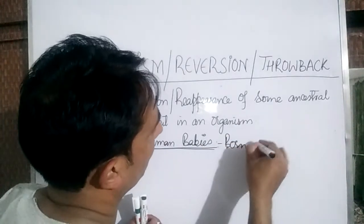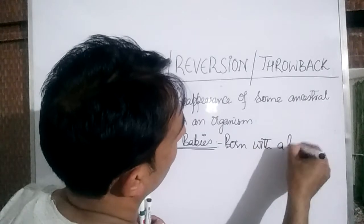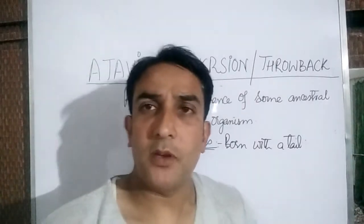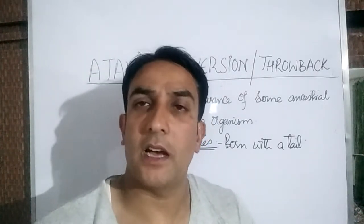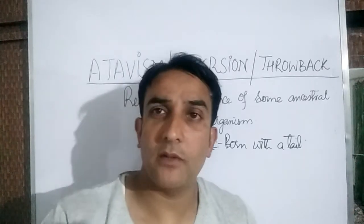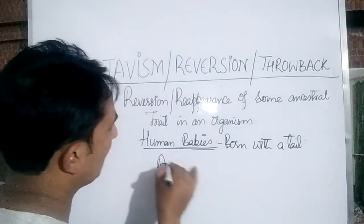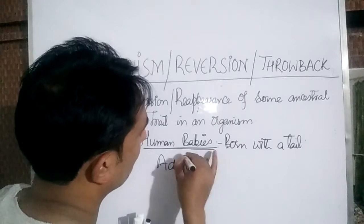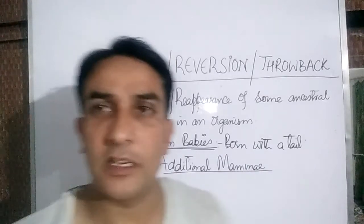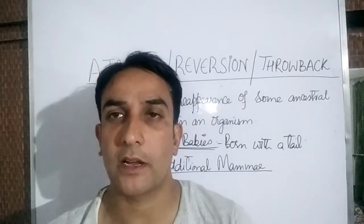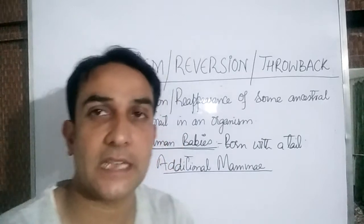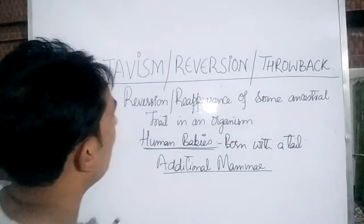Another example is that some human babies are born with additional mammary glands. We usually have two mammary glands on the chest, but some human babies are born with additional ones. This presence of additional mammary glands is also the reversion of some ancestral characters, not parental characters, and is also known as throwback, reversion, or atavism.